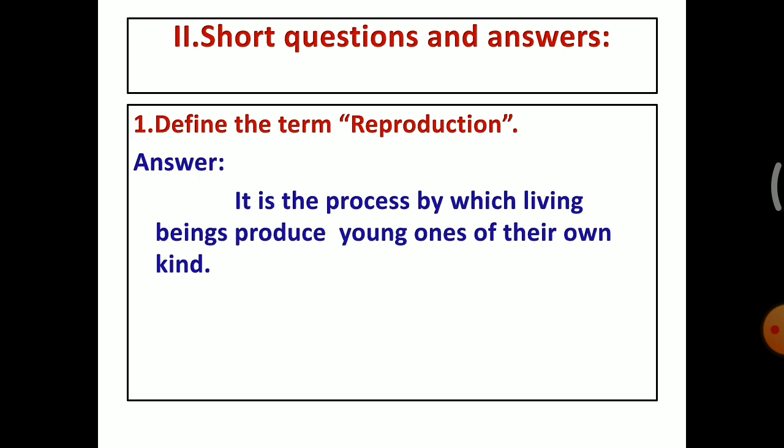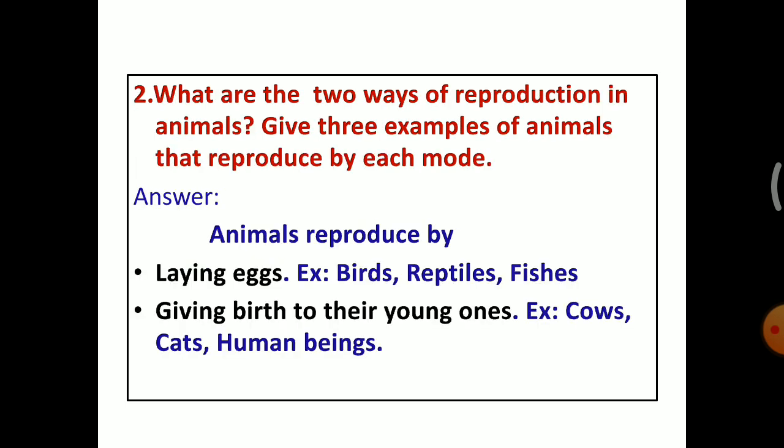After completing this question you have to draw a line. The next one, what are the two ways of reproduction in animals? Give three examples of animals that reproduce by each mode. The answer is animals reproduce by laying eggs, giving birth to their young ones. The example for laying eggs are birds, reptiles, fish.